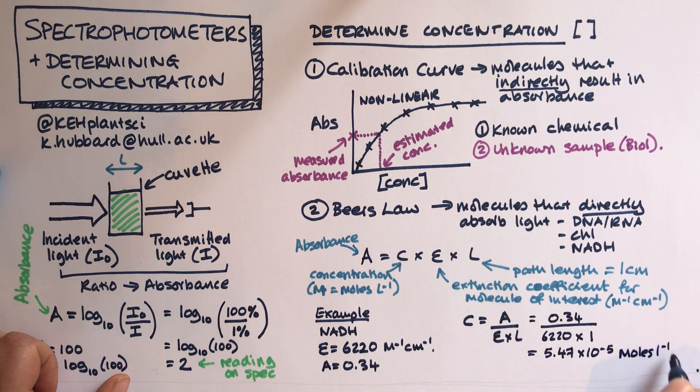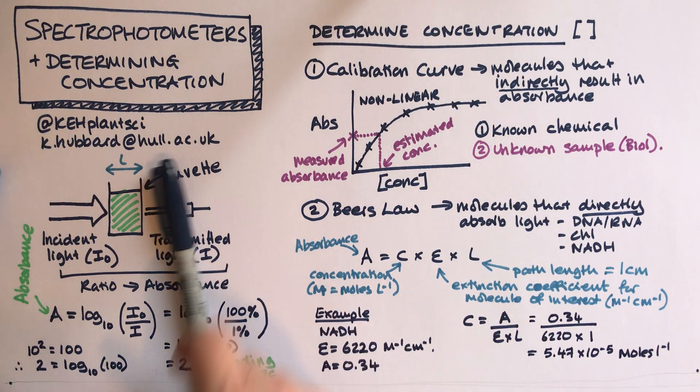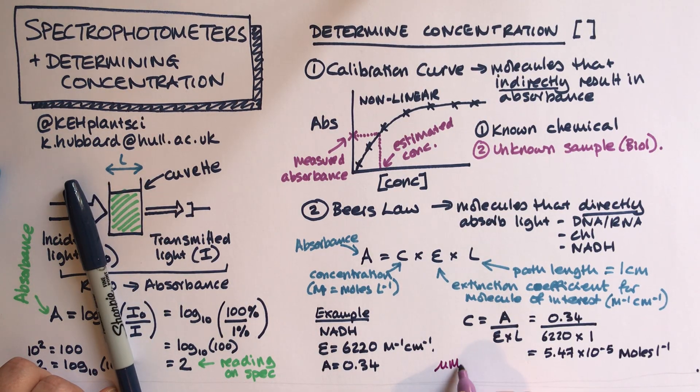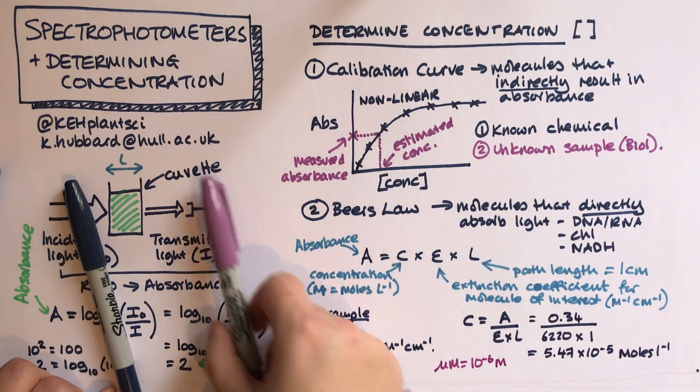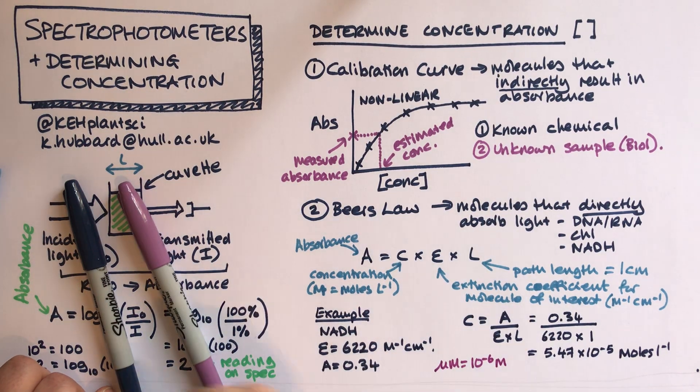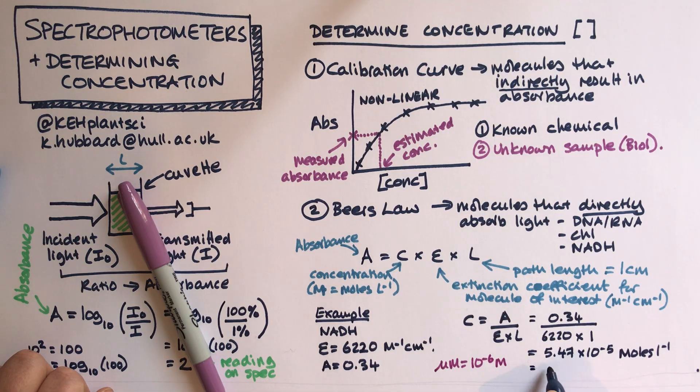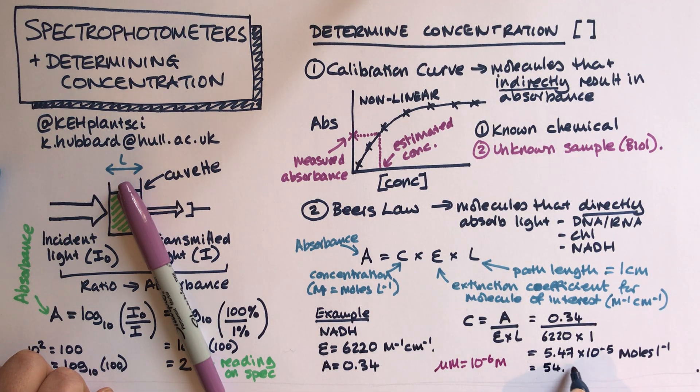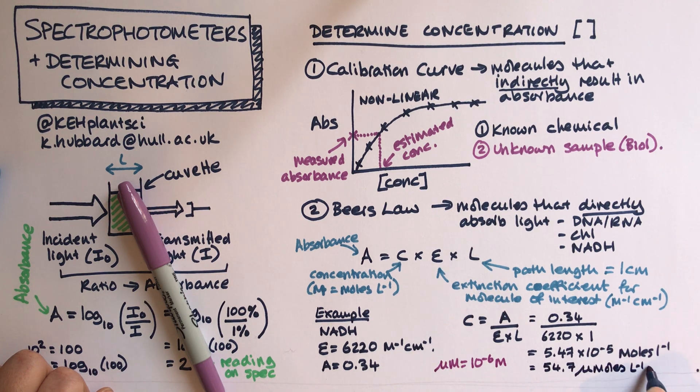If I do that, I get an answer of 5.47 times 10 to the minus 5 molar, which is moles per liter. That's a slightly funny way of expressing that. What a biologist would do is express that in terms of micromolar. If you remember, micromolar is 10 to the minus 6 molar, so it's a million times smaller. That in micromolar would be 54.7 micromoles per liter, which is the same thing as micromolar.